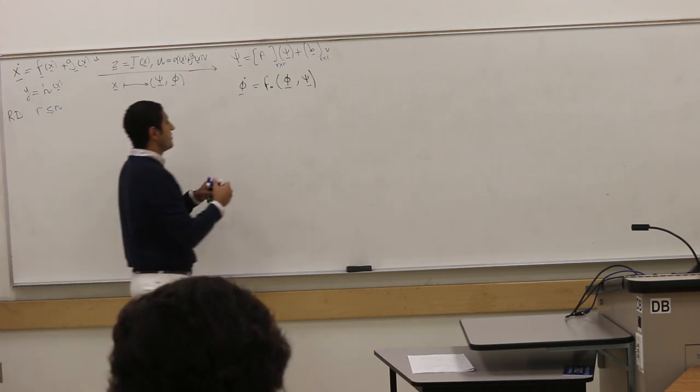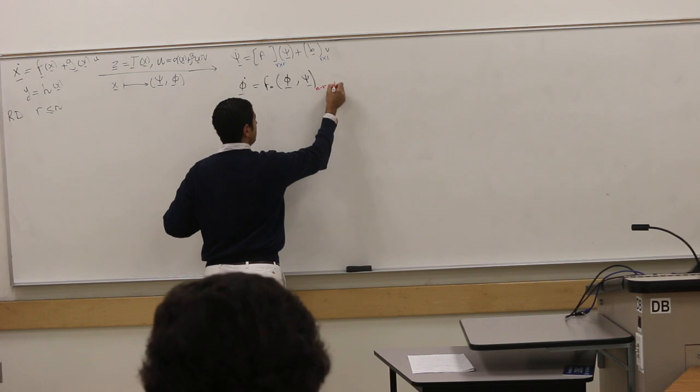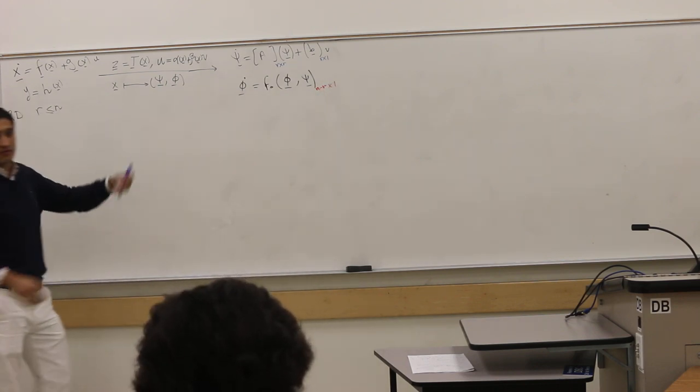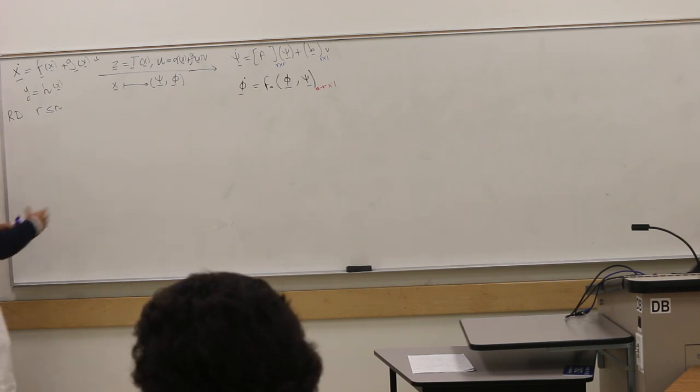This is N minus R, the rest. We showed last time that this is unobservable, and we related this unobservability for linear systems to pole-zero cancellation.